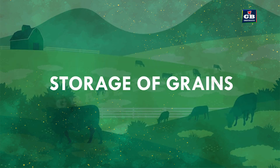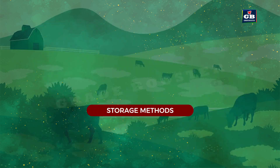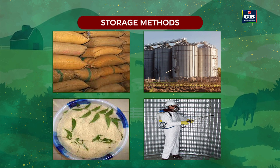Storage of grains: grains must be dried in the sun before storage to prevent damage. Farmers store grains in jute bags or metallic bins. On large scale, grains are stored in silos and granaries. At home, neem leaves are used to protect grains from insects. In large storage godowns, chemical treatments are applied to the grains.